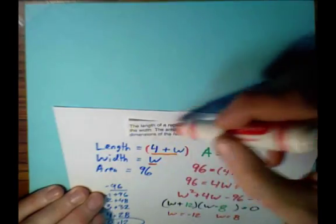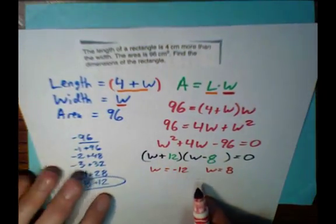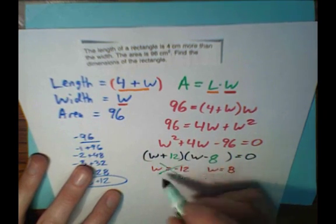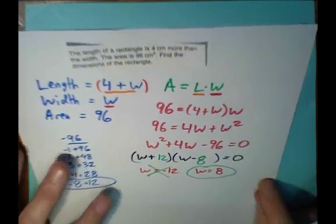Getting back to the original problem, it's talking about the length and width of a rectangle. And the width of the rectangle is W. Does it make any sense that the width could be negative 12? No. So we're going to just ignore this answer. This doesn't make any sense. This is really the best answer for the width.